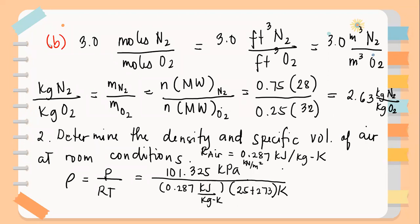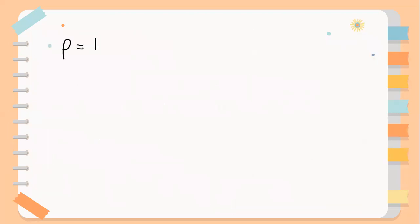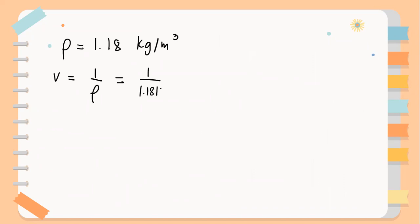We have kilojoule, which is newton meter. Pascal is newton per square meter. Cancel the kelvin; joule and newton cancel. We have the density in kilogram per cubic meter. Therefore, the density is equal to 1.18 kilogram per cubic meter. For the specific volume, specific volume is 1 over density, which is 1 over 1.18. The specific volume is equal to 0.847 cubic meter per kilogram.